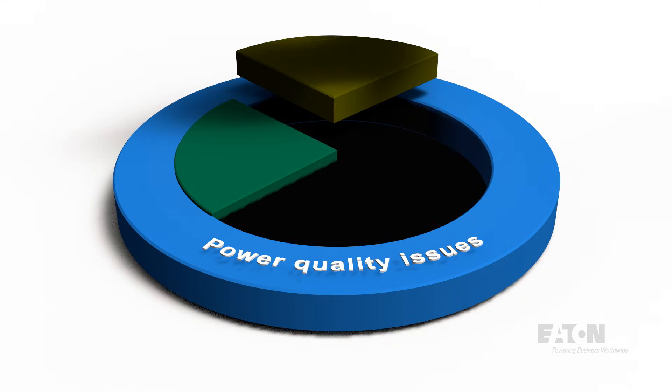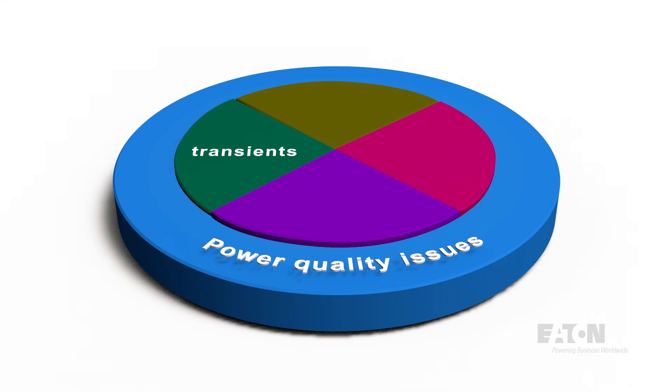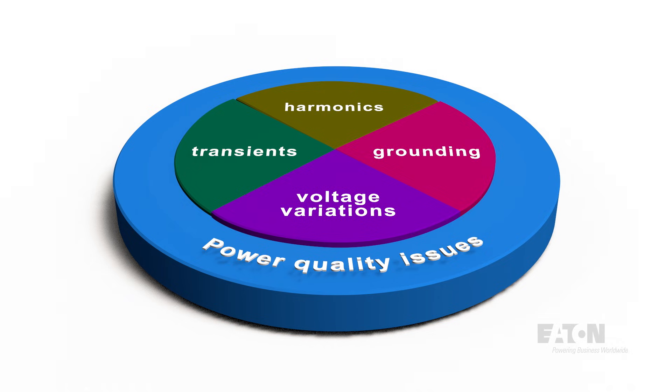Power quality issues can be broken down into four main categories: transients, harmonics, voltage variations, and grounding. Of course, within these broad categories there are many subcategories, but understanding which overarching issue we're looking at will help us reach a conclusion. Knowing what to look for, maintaining a consistent approach to problem solving, and working with an expert will help you avoid common or reoccurring problems.